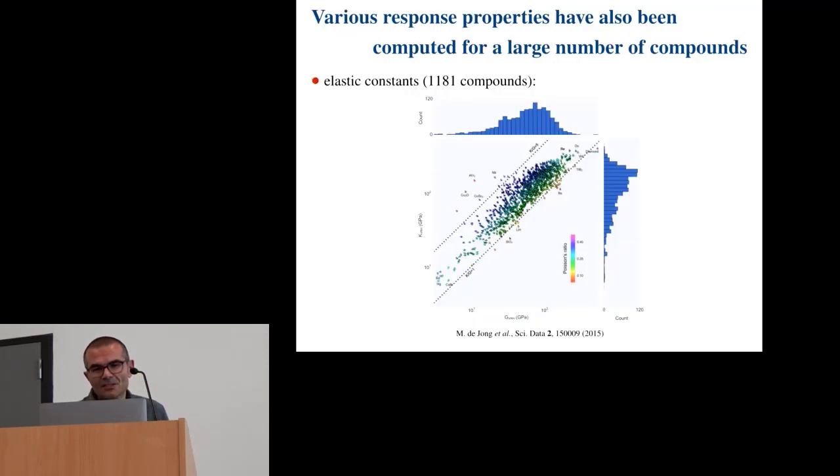However, still there's a number of those that have been computed. So, for instance, there has been work on the elastic constant, and so the numbers that you see now, the numbers that you see here may be a bit outdated, but so in this work that was published in 2015, you have here the elastic constants for roughly 1,200 compounds that were computed.